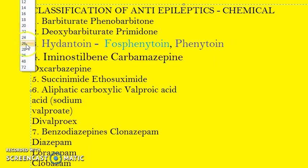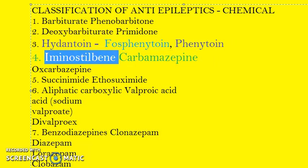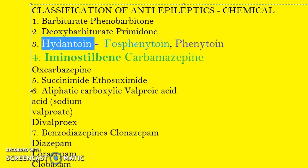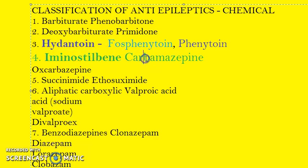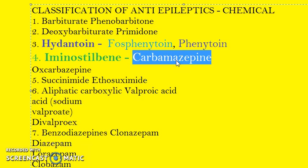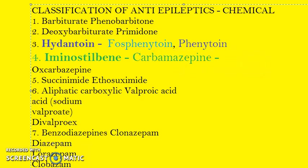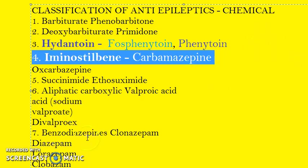The next most important one is iminostilbene — carbamazepine. Carbamazepine is the first line of drug for generalized tonic-clonic seizures and partial seizures, both simple and complex. So for grand mal epilepsy and partial seizures, carbamazepine is very important.